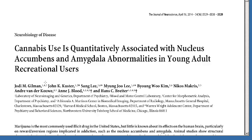The nucleus accumbens and the amygdala are parts of brain anatomy. Abnormalities are things that are out of the ordinary. In medical terms, the phrase "young adults" has a very specific meaning of people who are between 19 and 24 years of age. Finally, recreational use is a phrase used to describe people who use drugs for the broad purpose of enhancing life, as opposed to treating a medical condition or because of addiction. So, putting all of this information together, this article is about the authors studying the relationship between the recreational use of marijuana in young people and the shapes or sizes of certain parts of their brains.